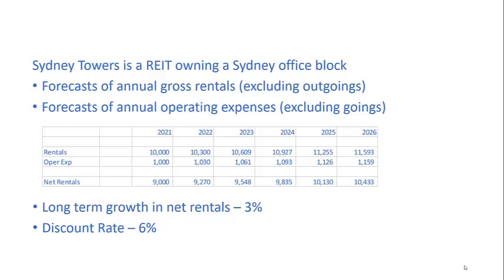The application of fair value accounting requires we determine what the fair value is, and the basis for doing this is to have a model. One of those models we could focus on here is an income model, where we forecast what the income is going to be in future periods attributable to that asset. From the table below, I've forecast the rentals out for a number of years along with the operating expenses, and that gives me a net rental income.